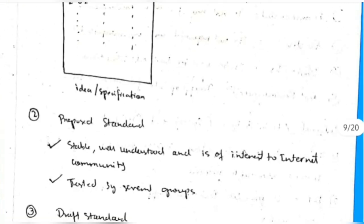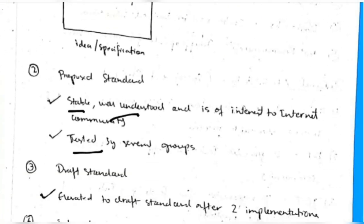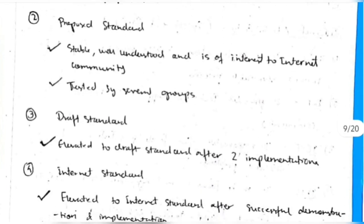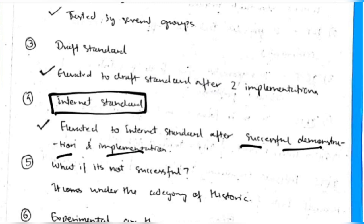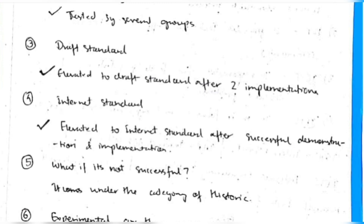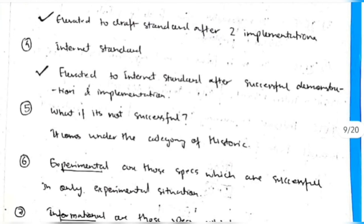An idea starts as a specification. When tested by several groups and found stable, well-understood, and in the interest of the internet community, it becomes a proposed standard. If implemented successfully twice, it becomes a draft standard. After a successful demonstration to main authorities, it becomes an internet standard included in official documents. If unsuccessful, it is categorized as historic.